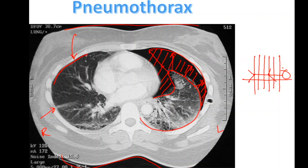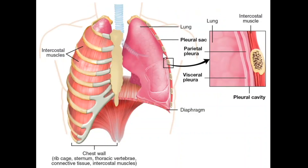The visceral pleura, which is the covering of the lung, is rubbing up against the parietal pleura, which is right up against it. When that potential space is filled with air, that's what we call a pneumothorax. Here's a better view — you can see the two layers: the visceral pleura and the parietal pleura, with this empty potential space in between. When that gets expanded, that's known as a pneumothorax.